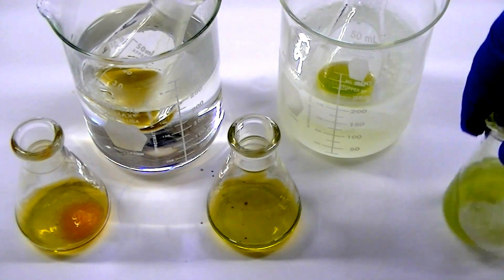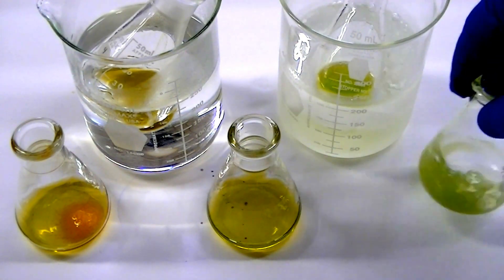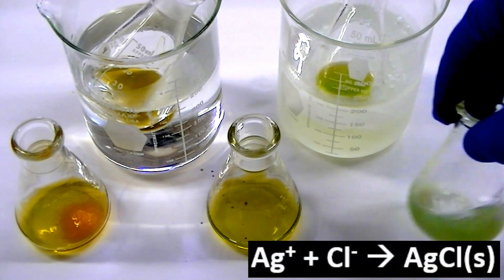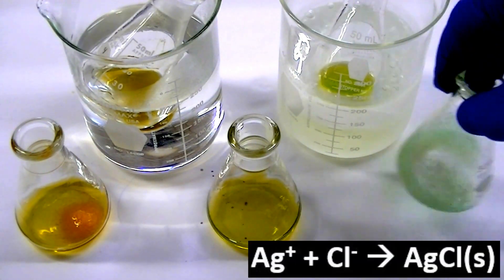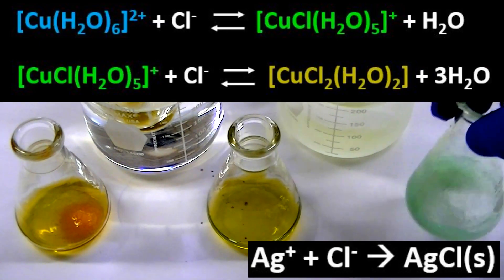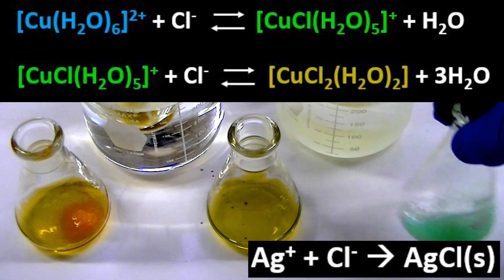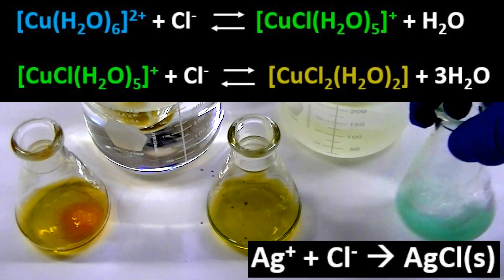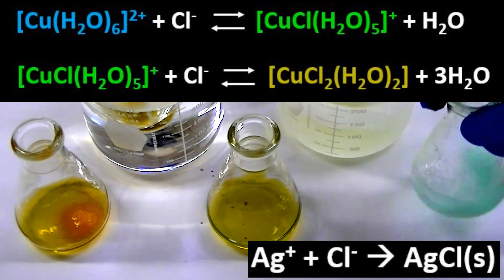The added silver ions precipitate out any chloride ions in the system. This chloride ion removal has the effect of shifting the equilibrium displayed above strongly to the left. This forms the free copper ion, which is blue in color.